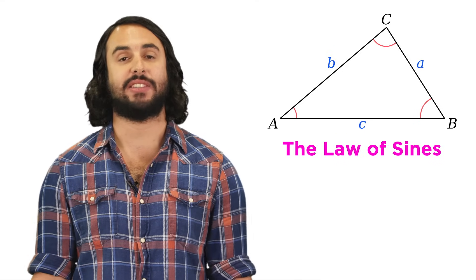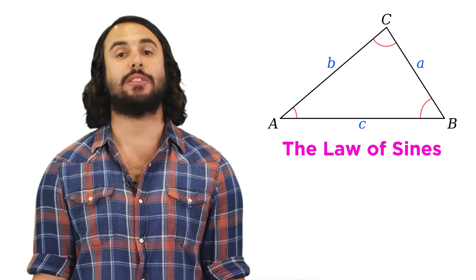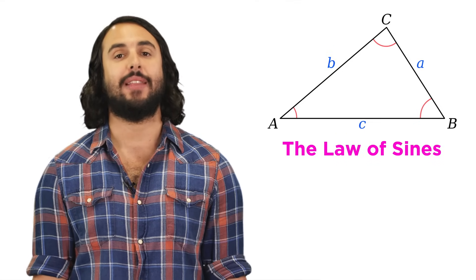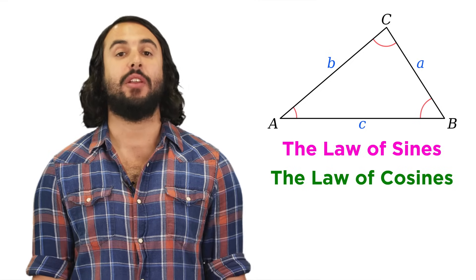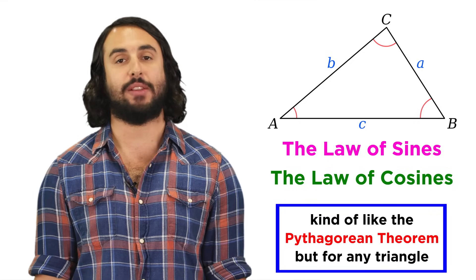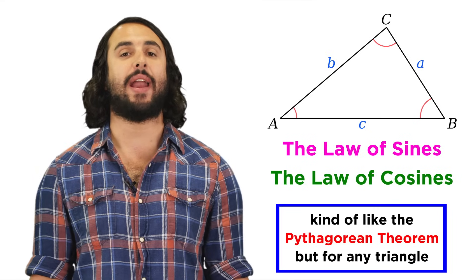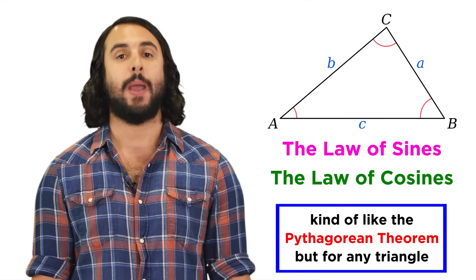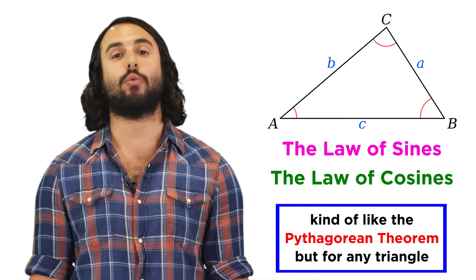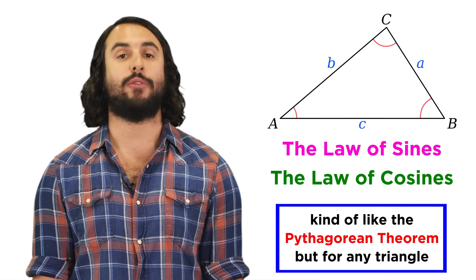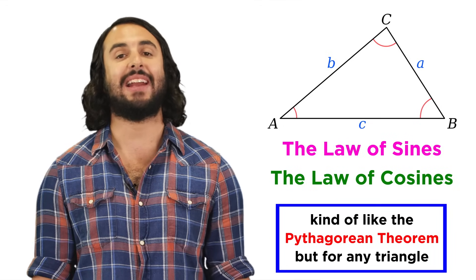We just learned the law of sines for oblique triangles, so let's learn one more law of importance. That's the law of cosines. This one is sort of like the Pythagorean theorem, in that it relates the squares of the lengths of the triangle, but the Pythagorean theorem works only for right triangles, whereas the law of cosines works for any triangle.